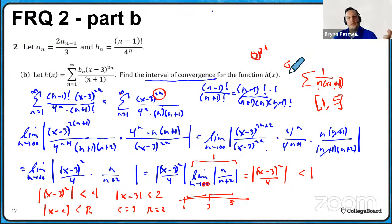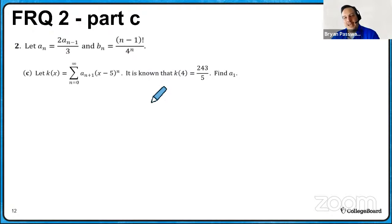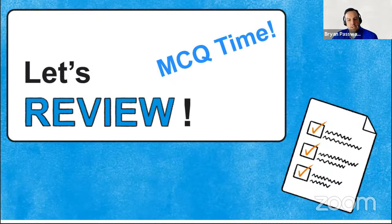We'll throw it back to Tony. There are two other good parts to check out — Part C connects to what Tony mentioned in FRQ 1, so that lays some foundation for a hint on this question. And we're going to jump back to some multiple choice. Tony will take us through a few really cool multiple choice problems.